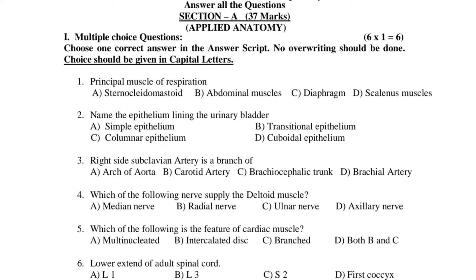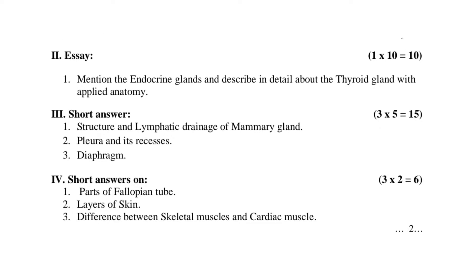Sixth question: Lower extent of adult spinal cord. A. L1. B. L3. C. S2. D. First coccygeal. That completes Roman numeral I — multiple choice questions.